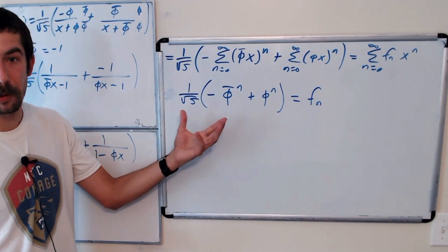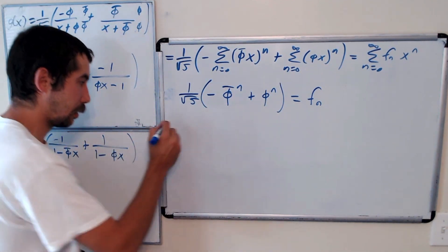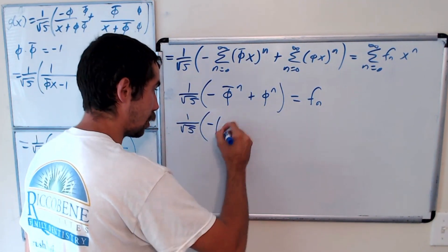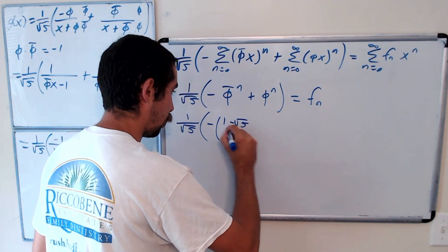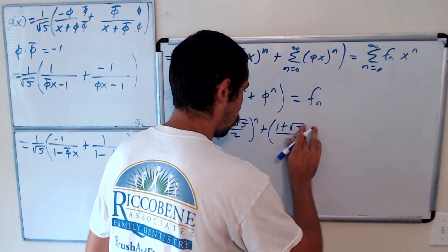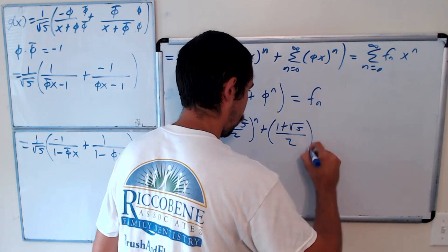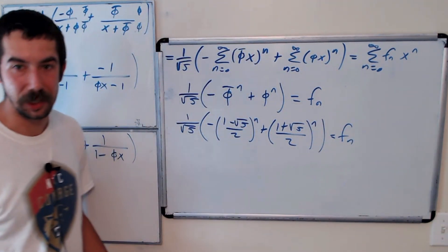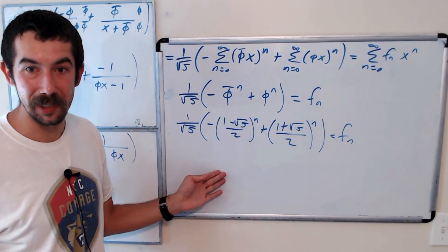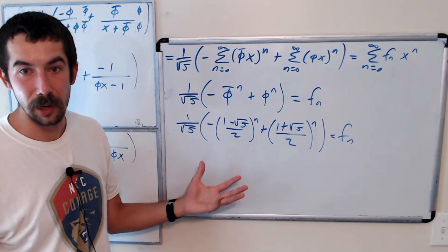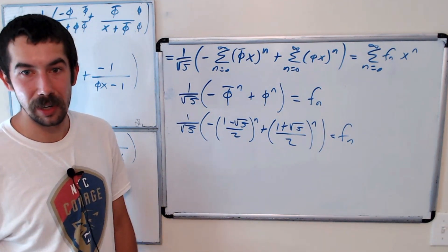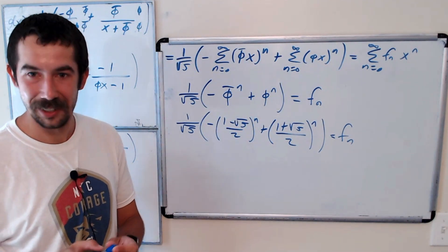Going back to recall what phi and phi-bar are: f_n equals 1 over root 5 times [(1 plus root 5 over 2) to the n minus (1 minus root 5 over 2) to the n]. That's the nth Fibonacci number. So if someone asks for the 1,000th Fibonacci number, you can use this formula. Many of you have seen this formula before, but maybe didn't know why it was true — that's what we showed today. Let me know if you like this type of video; generating functions are very useful, so I'm happy to make more.